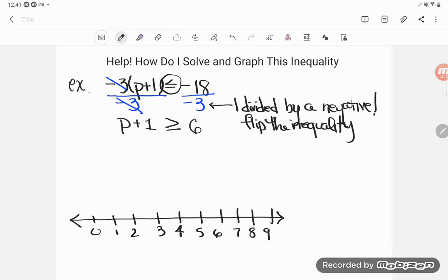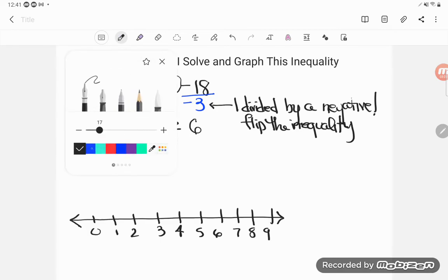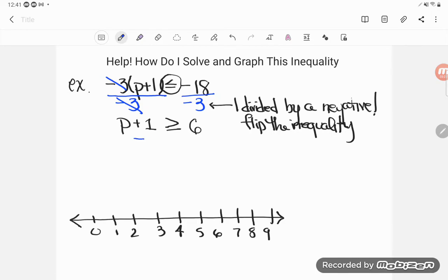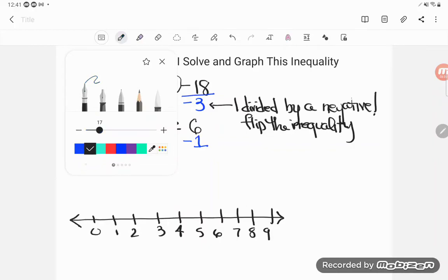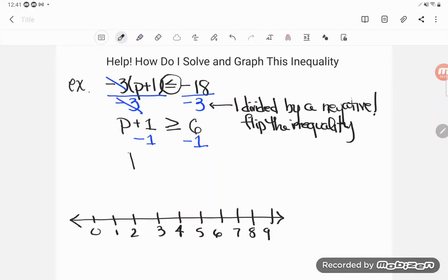And now I'm almost done. P is almost alone. Now I need to get rid of a plus one, and this guy really is adding with P, and so I will do the opposite. Of course, the opposite of adding is subtracting. And I can do whatever I want as long as I do it to both sides. And let's see what my new inequality will be. I'll get P plus one and minus one will cancel. Now adding and subtracting never ever changes your inequality symbol, so that's going to remain the same. And then six minus one is five. So I get this: P is greater than or equal to five.